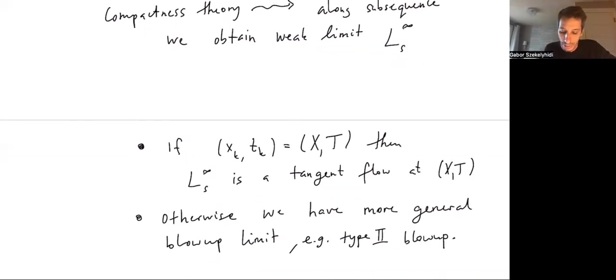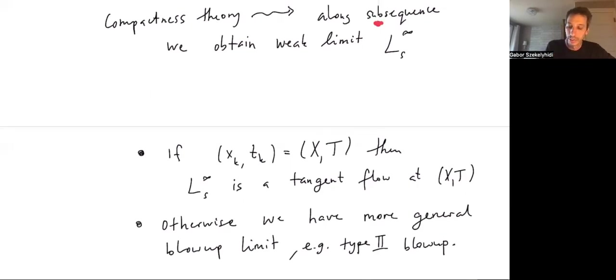There's one main special case. It's when you choose all of your base points along the sequence to simply be the singular point, capital X, capital T. In this case, any limit that you obtain in this way is called a tangent flow at the singularity. This is the kind of first order information that one can extract. It's like the tangent line to a curve. One of the fundamental problems is whether this 'a' can be replaced by 'the', i.e., is the tangent flow unique at a given singular point, or does it depend on the sequence of k's that you chose? The compactness theory will just give you a subsequence.